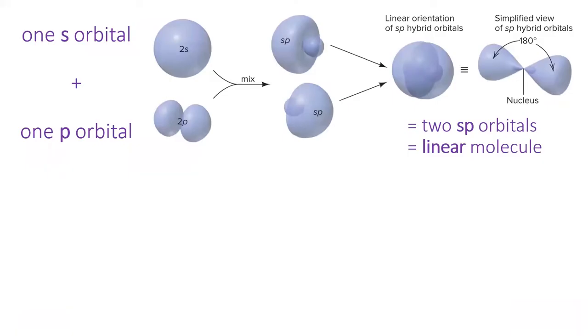Let's take a closer look at how one S orbital combines with one P orbital to form two SP orbitals. Notice in the image that the SP orbitals are oriented 180 degrees from each other. SP orbitals form a linear molecule.